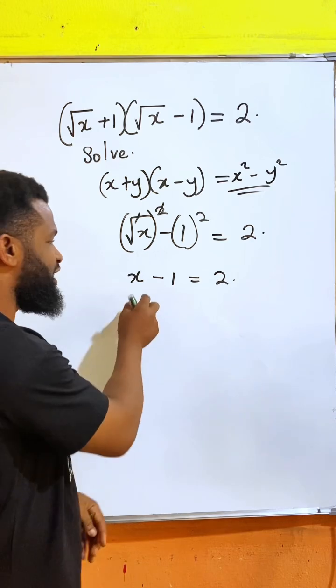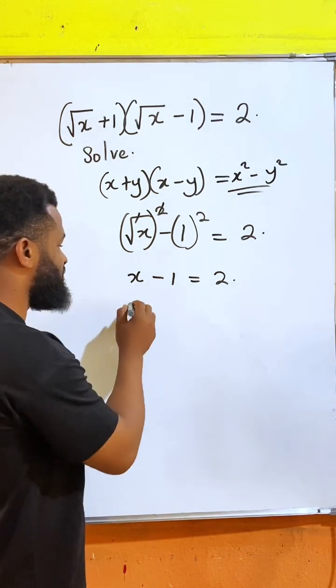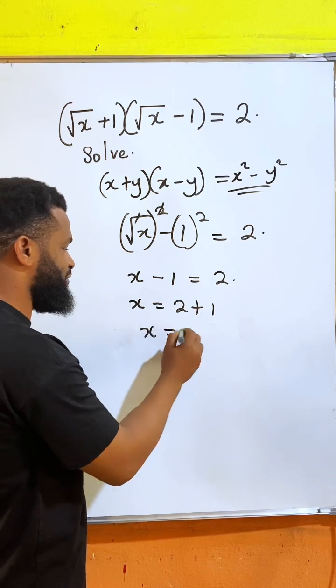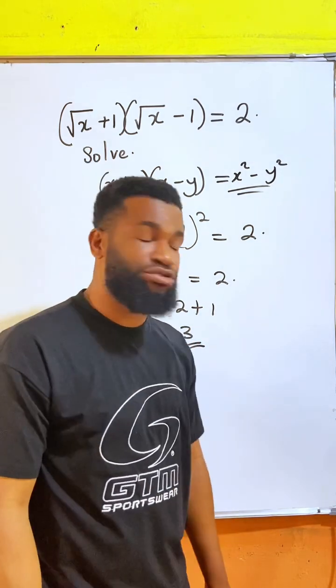At this point, I'm going to make x the subject of the formula. I'm going to have that x equals 2 plus 1, and x is given as 3. So let's check if that is true.